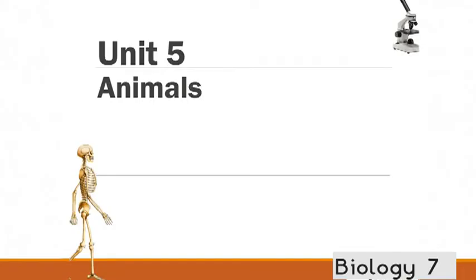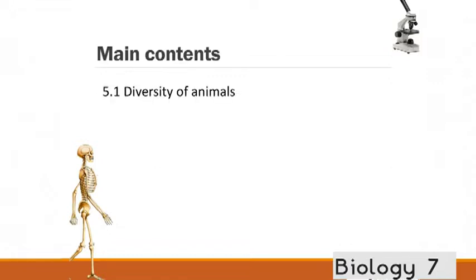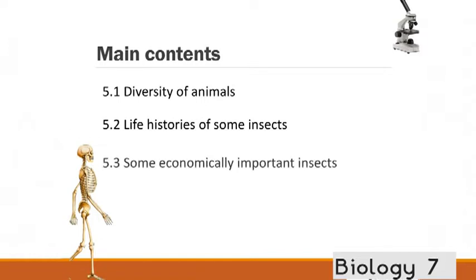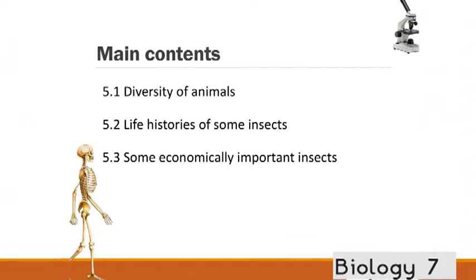Unit 5 on animals. This unit has four main components. The first that we'll go through is the diversity of animals. In 5.2 we'll be looking at the life histories of some insects. In 5.3 we'll be looking at some economically important insects and in 5.4 we'll be investigating social insects.